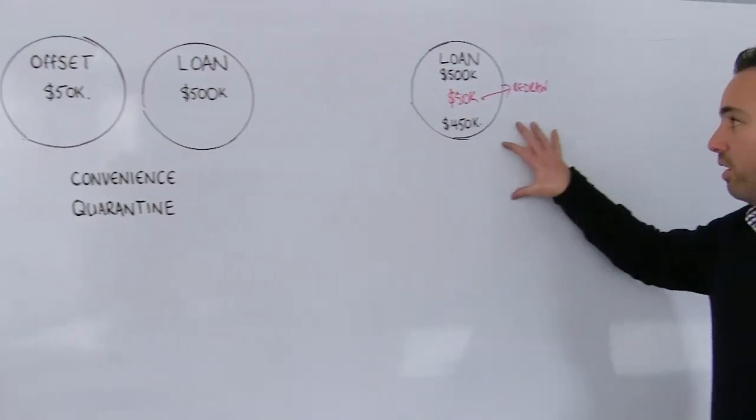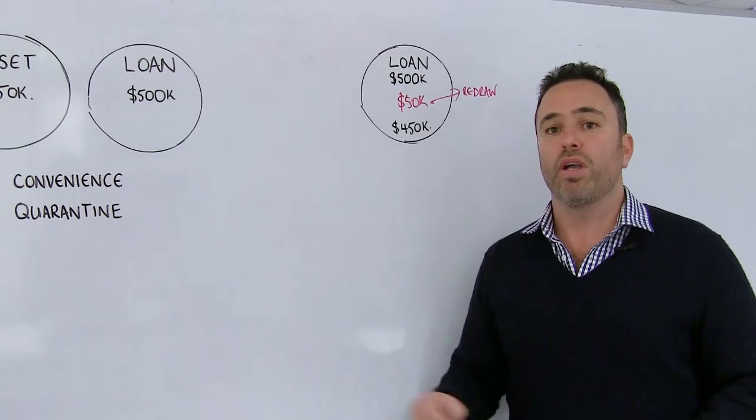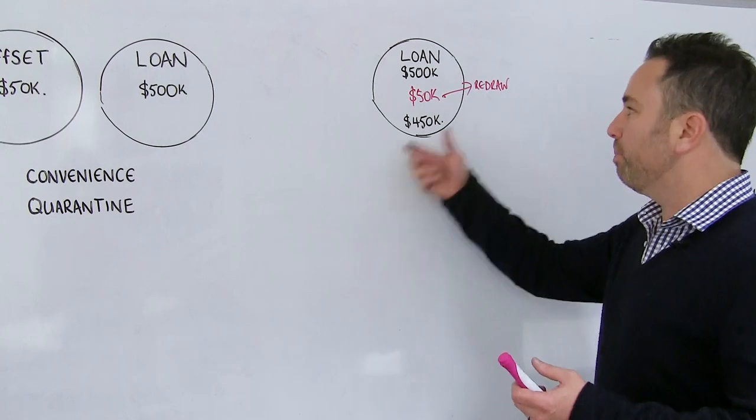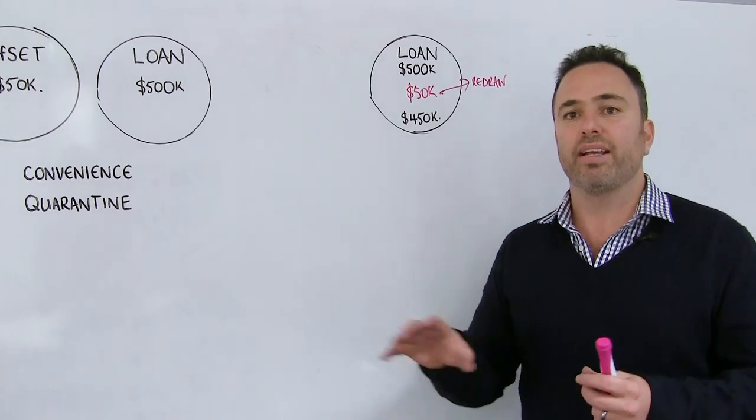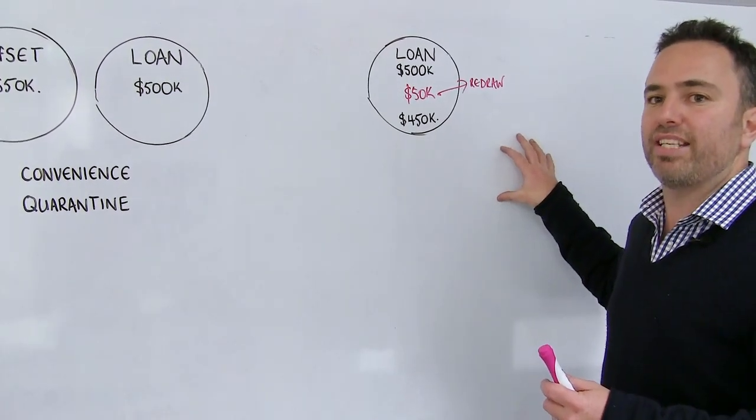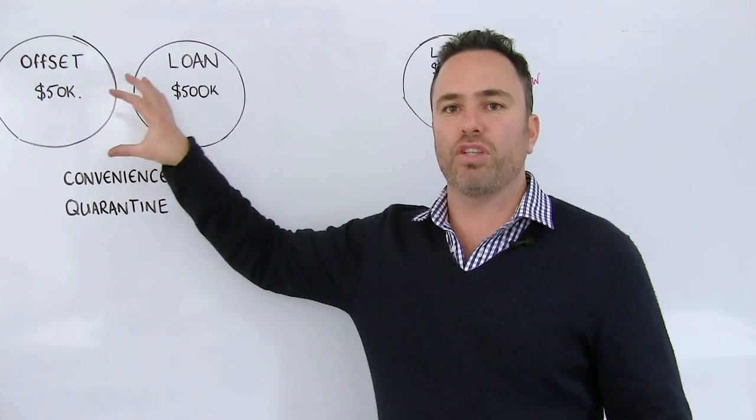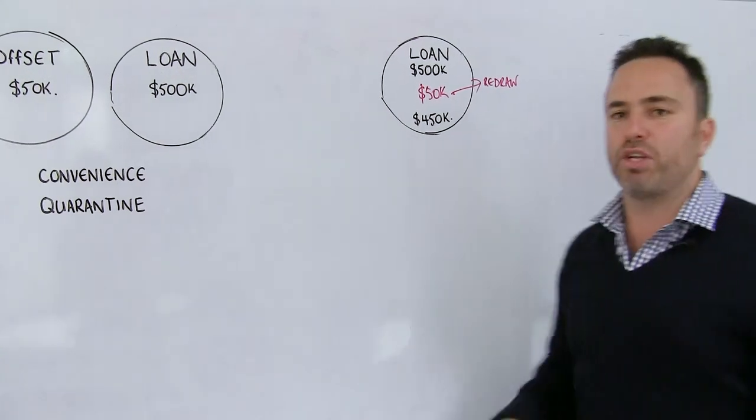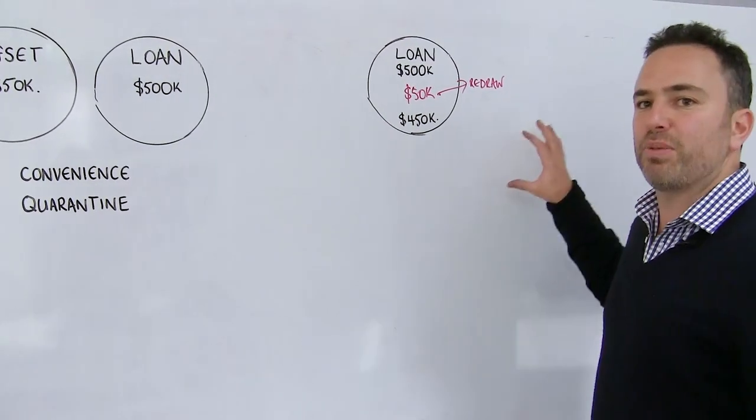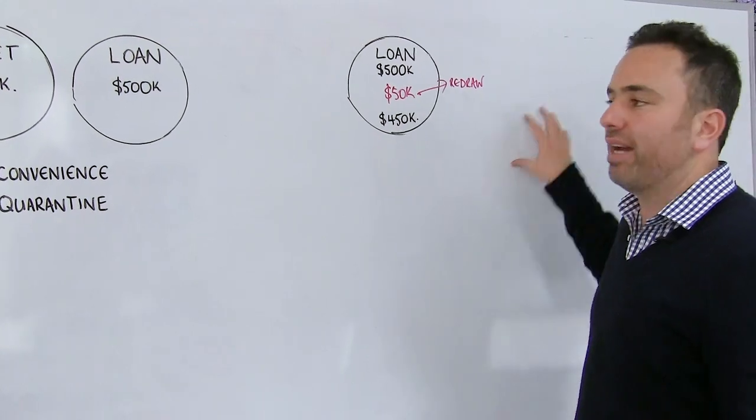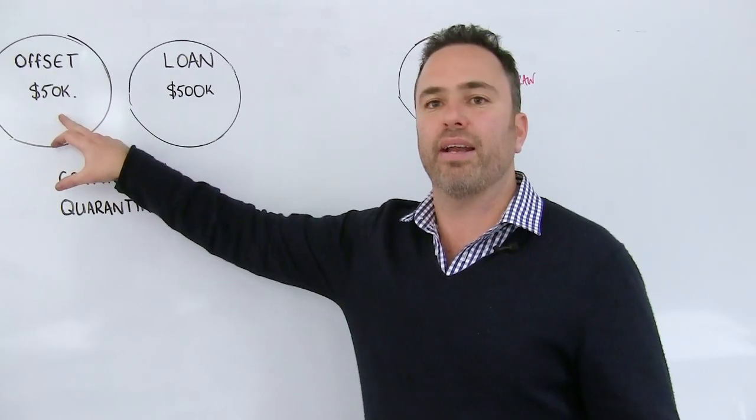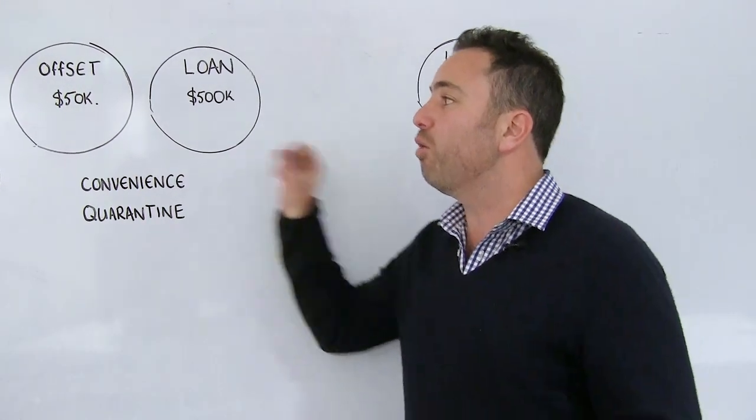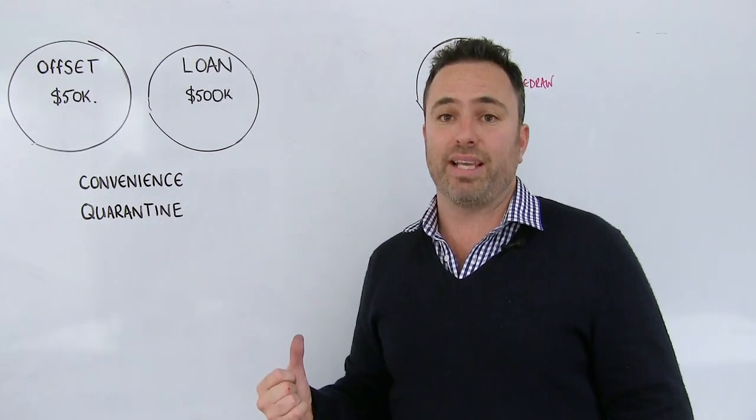So think about this. With this loan facility, I spoke about it before, you actually have to manually take the money out and place it into your transaction account. Now, when you place it into your transaction account, the amount you've got in your transaction account is going to be less than the $50,000 you've got sitting in your offset account. So by nature, when you're visibly looking at your bank account, you don't have as much money in your nominated bank account as you would in this offset account, especially when you're using this offset account as your transaction account, i.e. all money's going into it and all money's coming out of it.